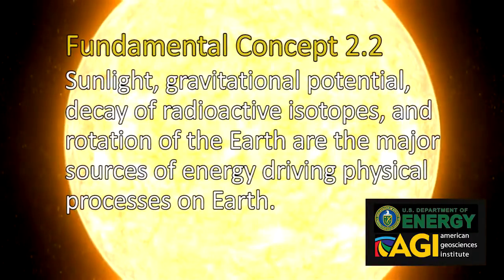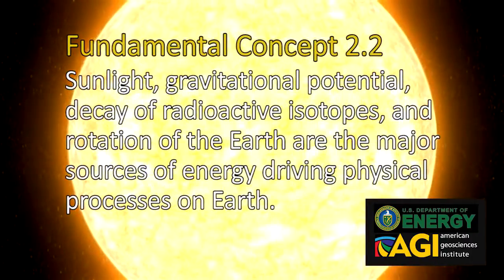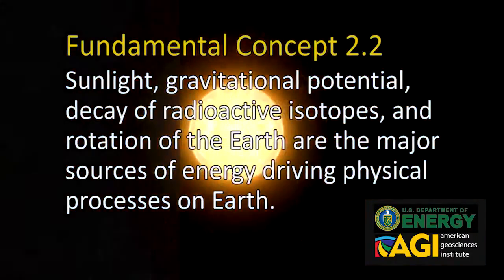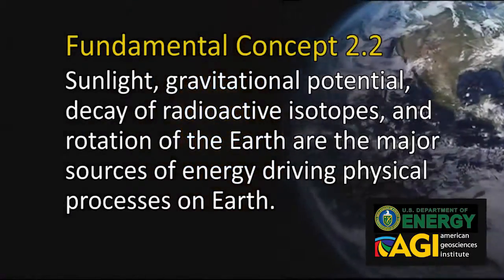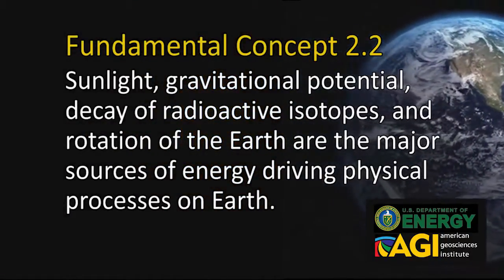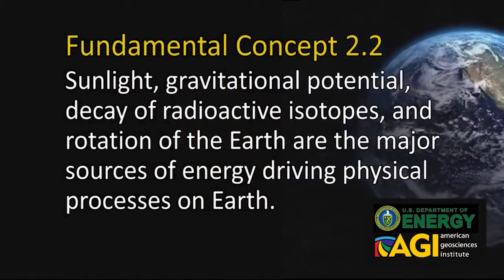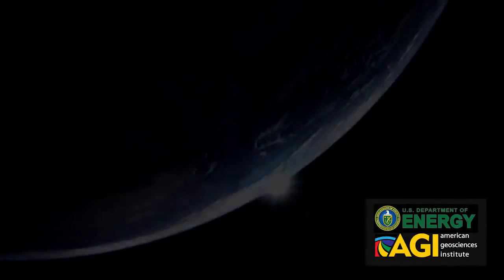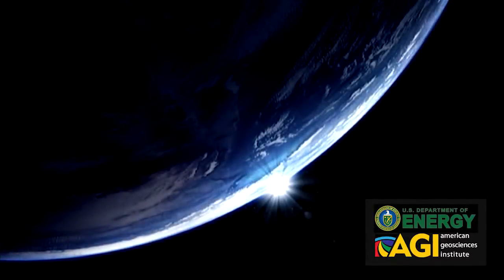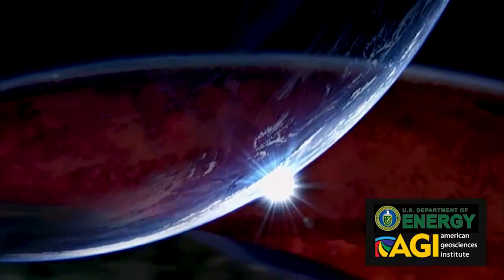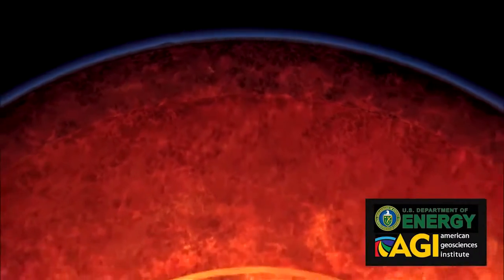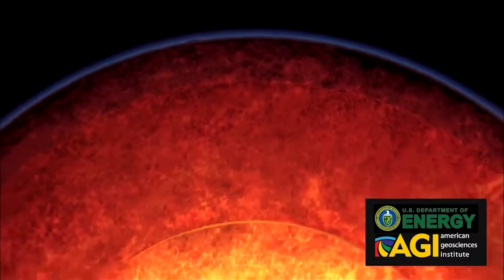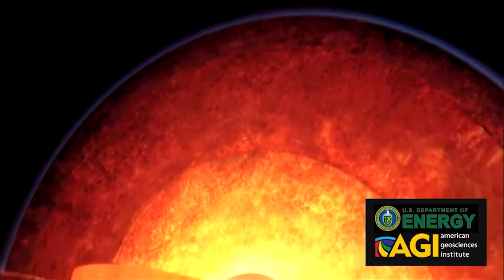Sunlight, gravitational potential, decay of radioactive isotopes, and rotation of the Earth are the major sources of energy driving physical processes on Earth. Sunlight is a source external to Earth, while radioactive isotopes and gravitational potential — with the exception of tidal energy — are internal.